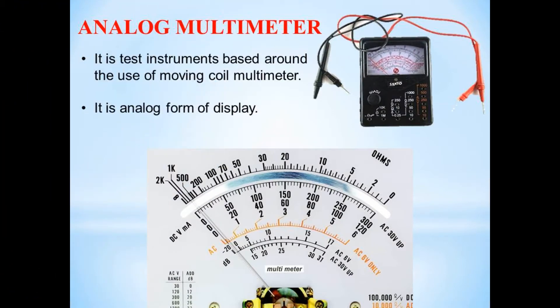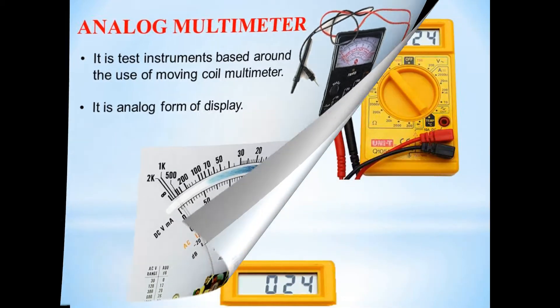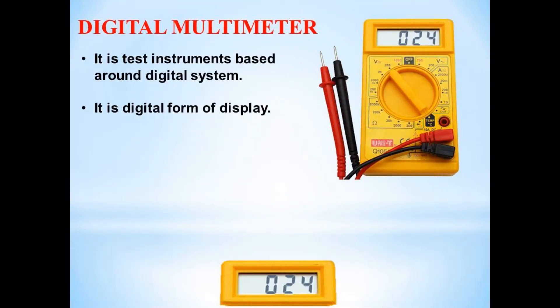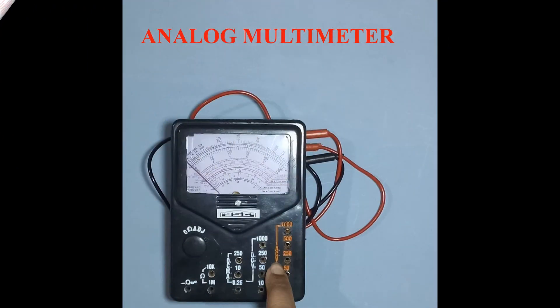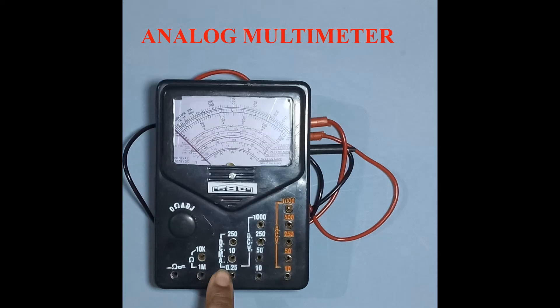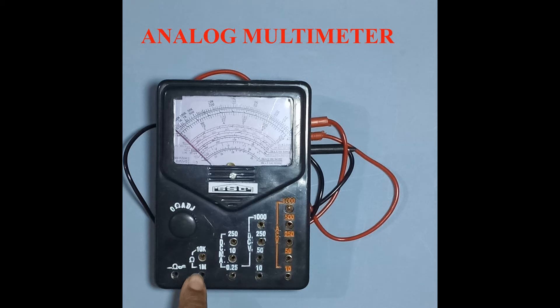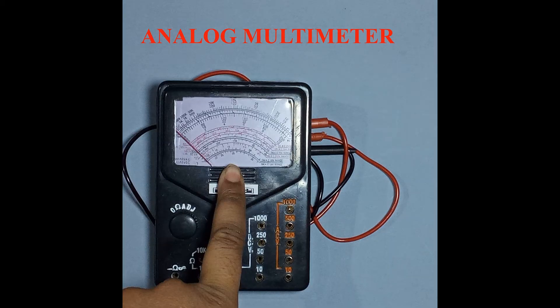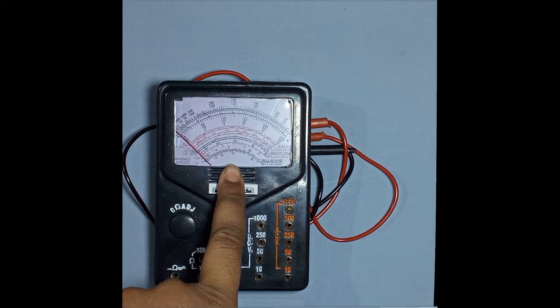Analog multimeter hai electronic component test karna che instrument asun, tya cha display ha ka tacho sorupa dasto. Digital Multimeter hai electronic component test karna che instrument asun, tya cha display ha digital svarupa dasto. Analog multimeter madde AC voltage, DC voltage, low range DC current, resistance mostta yetho. Yha cha display analog asun, yha cha accuracy kami yethe.